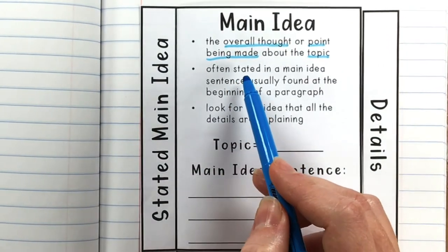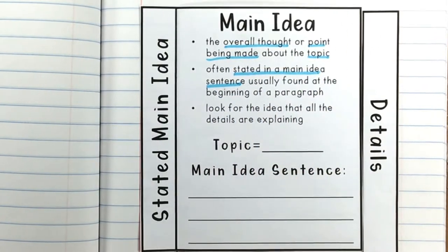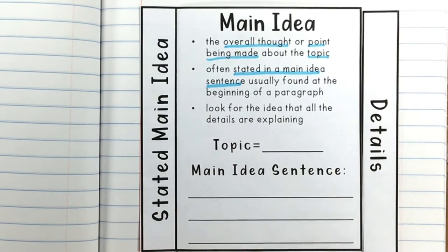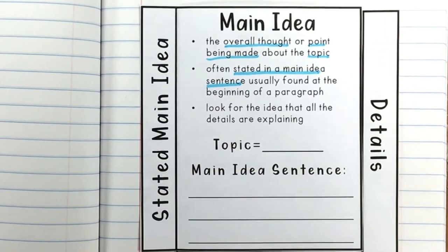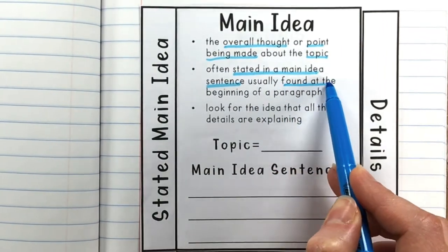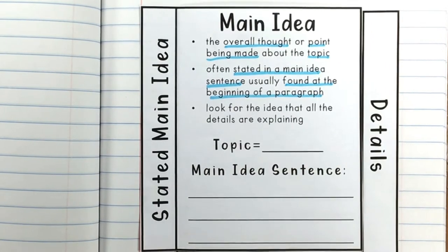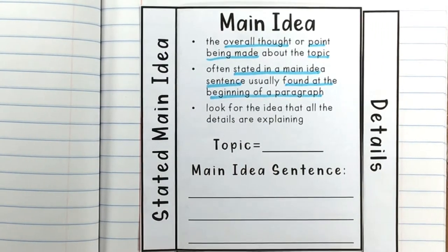Often the main idea is going to be stated in a main idea sentence. It doesn't have to be the whole sentence, but it could be a portion of one sentence. A lot of times you're going to have an actual stated sentence that you can find that is the overall thought or point being made. Now, this sentence is usually going to be found at the beginning of a paragraph, but it may be in the middle or even the last sentence, wrapping up the main idea thought for the paragraph.